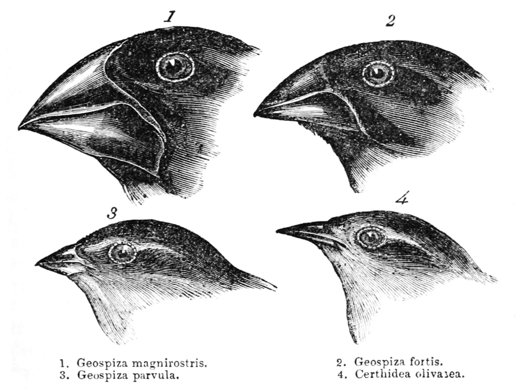The Silurian Lingula differs but little from the living species of this genus. Lingula is among the few brachiopods surviving today but also known from fossils over 500 million years old. In the fifth edition of The Origin of Species, Darwin wrote that: "...the periods during which species have undergone modification, though long as measured in years, have probably been short in comparison with the periods during which they retain the same form."